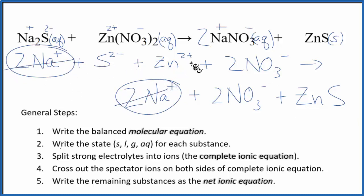What else do I have? 2 nitrate ions in the reactants, 2 in the products. Cross them out. What's left is the net ionic equation for sodium sulfide plus zinc nitrate.